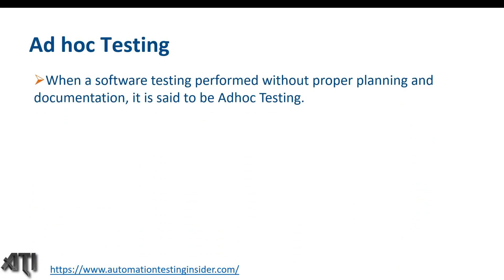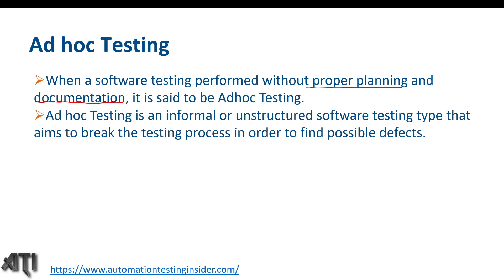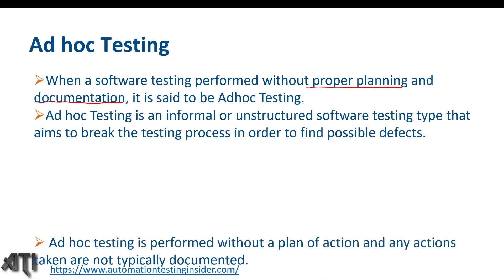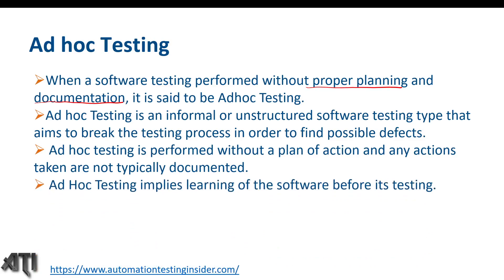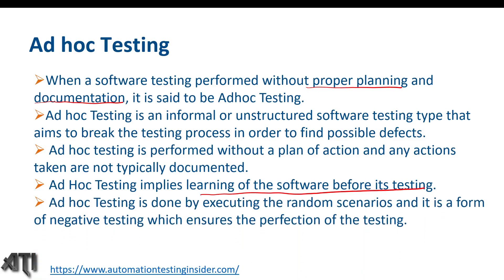When software testing is performed without proper planning and documentation, it is said to be ad hoc testing. Ad hoc testing is an informal or unstructured software testing type that aims to break the testing process in order to find possible defects. It is performed without a plan of action and any actions taken are not typically documented. Ad hoc testing implies learning of the software before its testing, and it is done by executing random scenarios. It is a form of negative testing which ensures the perfection of the testing.